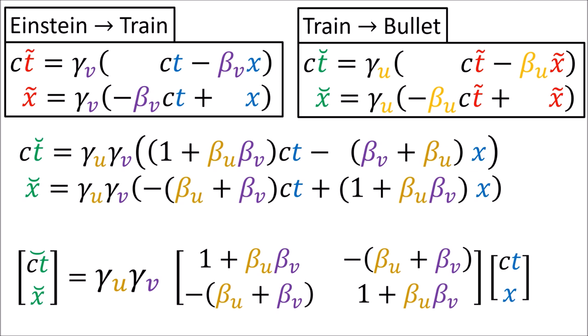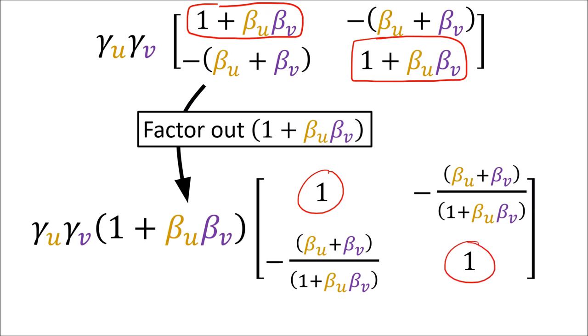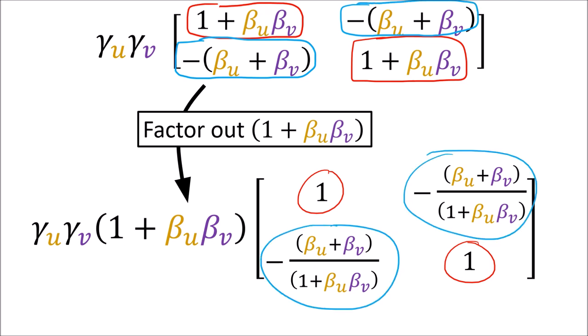It turns out we can simplify the coefficients in these equations. We factor out the term (1 plus beta-u times beta-v) from each entry in the matrix. This makes the main diagonal entries become 1, and the off-diagonal entries become negative (beta-u plus beta-v) all divided by (1 plus beta-u times beta-v). We then focus on the term out in front: gamma-u times gamma-v times (1 plus beta-u beta-v).